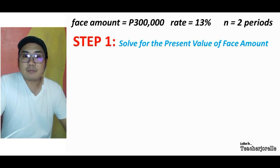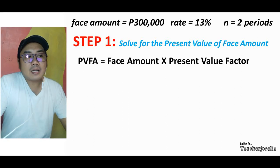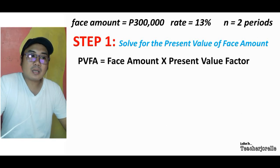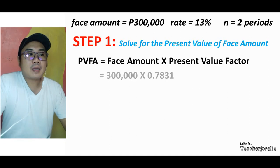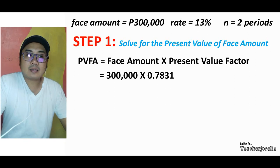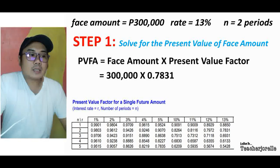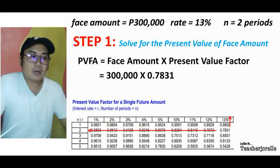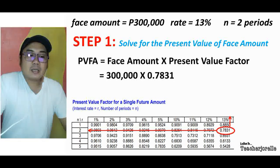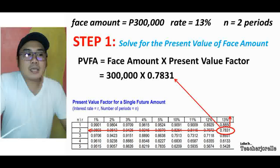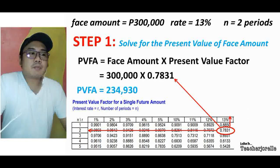Step 1: Solve for the present value of the face amount. The present value of the face amount equals the face amount multiplied by the present value factor. Our face amount is 300,000 and our present value factor is 0.7831 — found from the present value factor table at n=2 and effective rate of 13 percent. Multiplying gives us a present value of the face amount equal to 234,930.